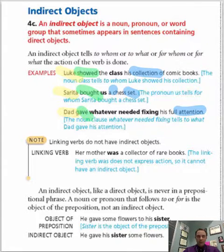Alright, just kind of wanted to clarify these other things on this page. Basically it says an indirect object, like a direct object, is never in a prepositional phrase. So be very careful of those. Like this one up here where it says of comic books. That's a prepositional phrase. We can't count it as anything.